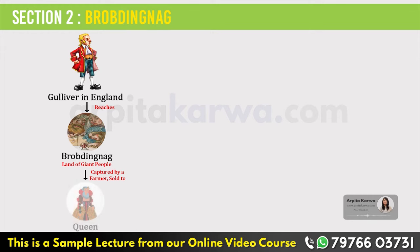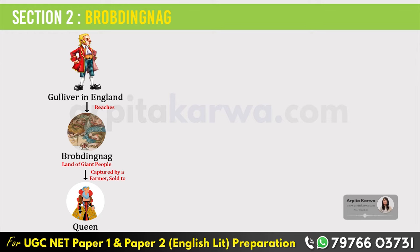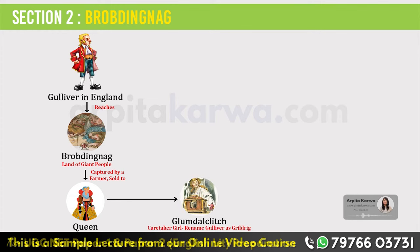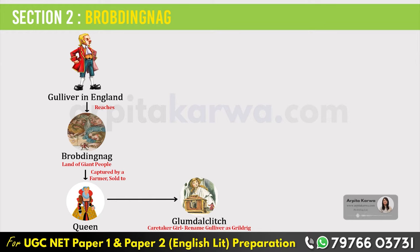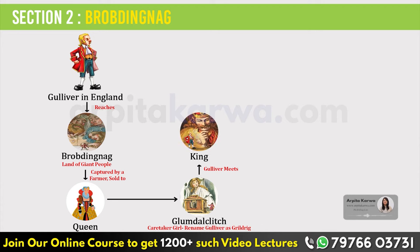The farmer further sells Gulliver to the queen in exchange for a thousand pieces of gold. Even in the queen's possession, Gulliver had to entertain with his musical talents. There was a caretaker girl named Glumdalclitch, appointed by the queen for Gulliver. She gave him the name Grildrig. In Brobdingnag, Gulliver is called Grildrig. Gulliver then meets the king of Brobdingnag and they have serious discussions about history, institutions, political science, and everything.